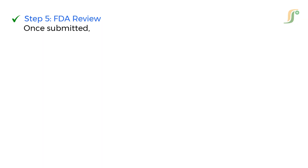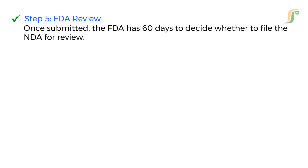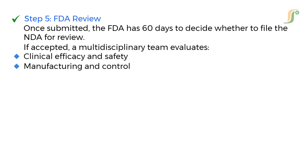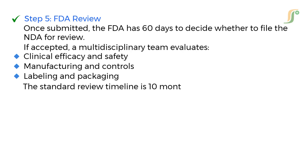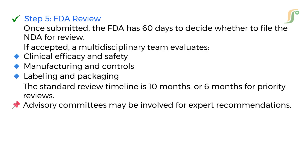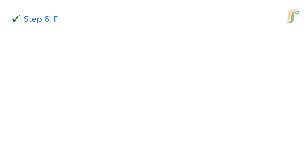Step 5: FDA Review. Once submitted, the FDA has 60 days to decide whether to file the NDA for review. If accepted, a multidisciplinary team evaluates clinical efficacy and safety, manufacturing and controls, and labeling and packaging. The standard review timeline is 10 months, or 6 months for priority reviews. Advisory committees may be involved for expert recommendations.